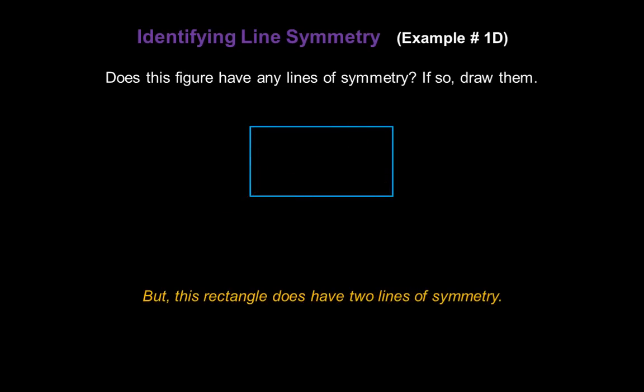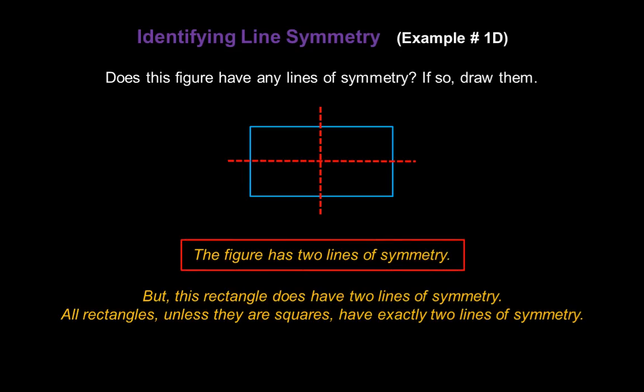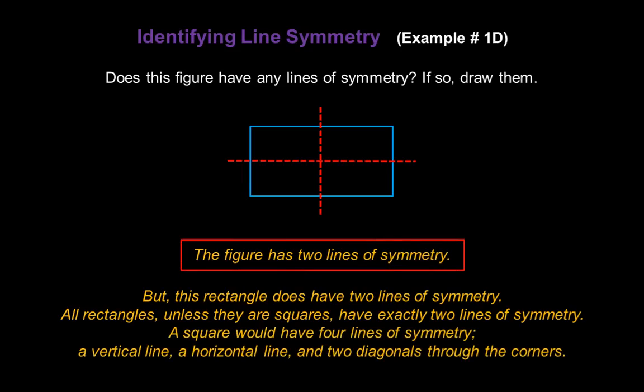But this rectangle does have two lines of symmetry — a vertical one and a horizontal one. All rectangles, unless they're squares, have exactly two lines of symmetry. So this figure has two lines of symmetry. A square would have four lines of symmetry: a vertical line, a horizontal line, and the two diagonals through the corners.